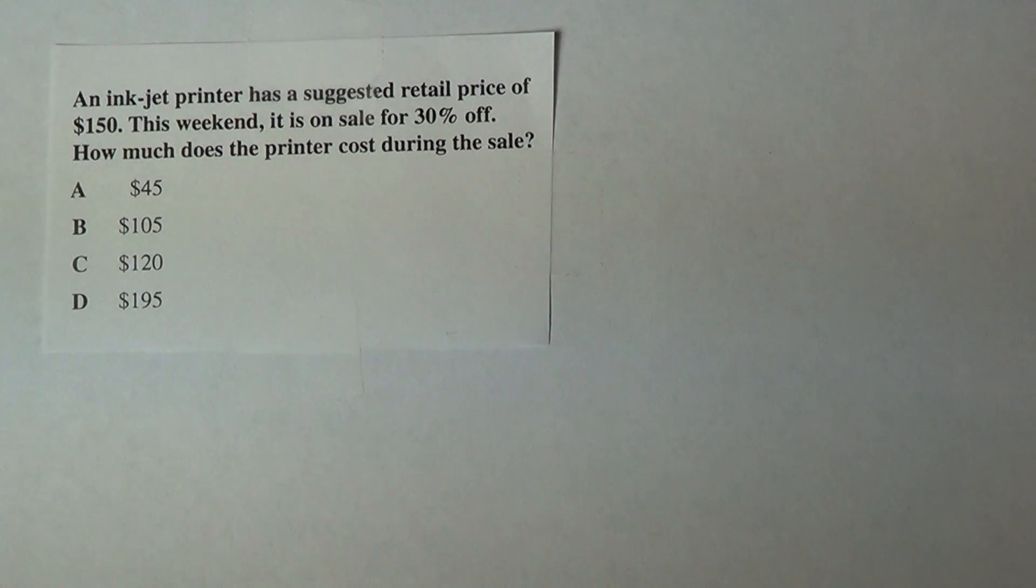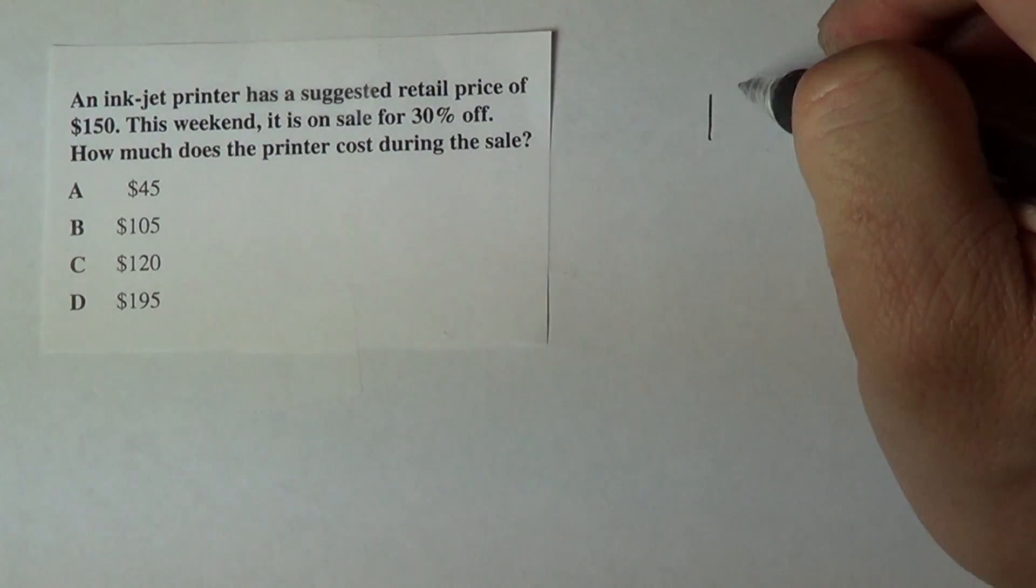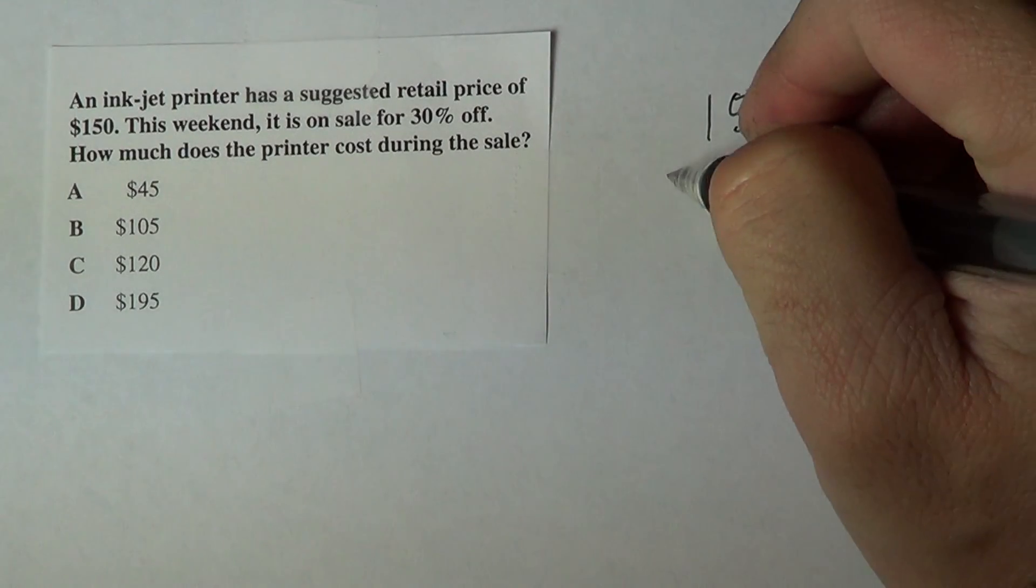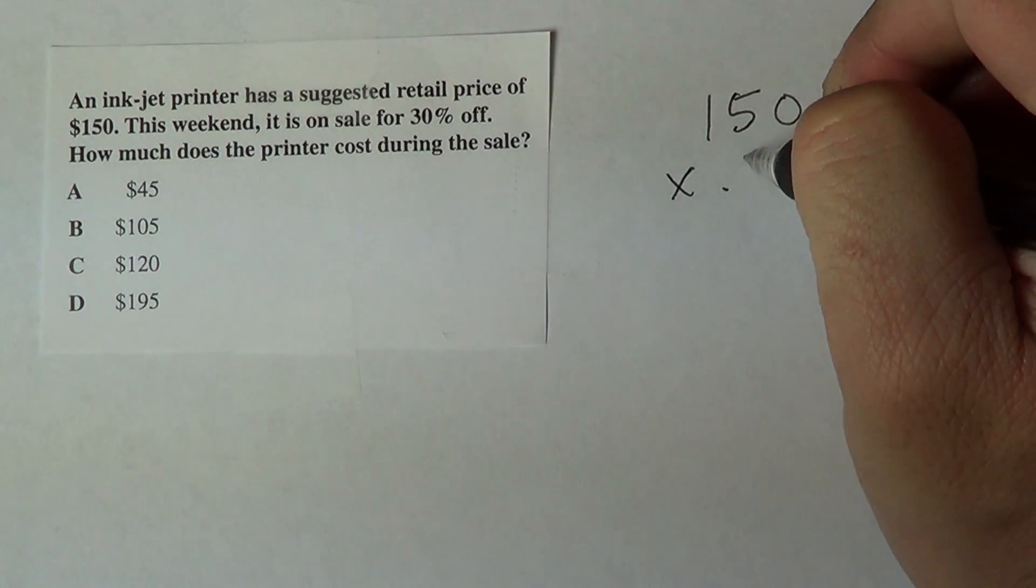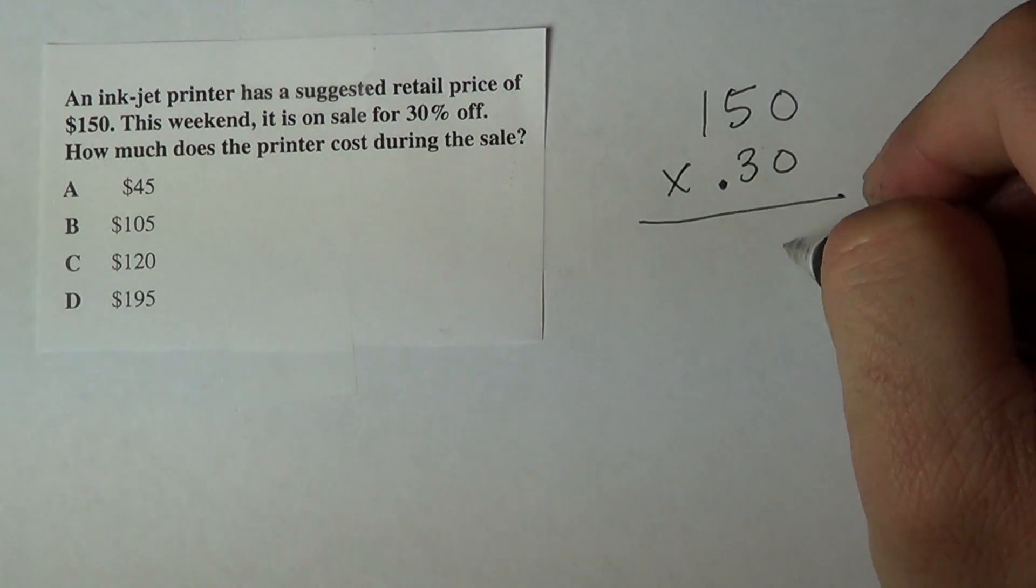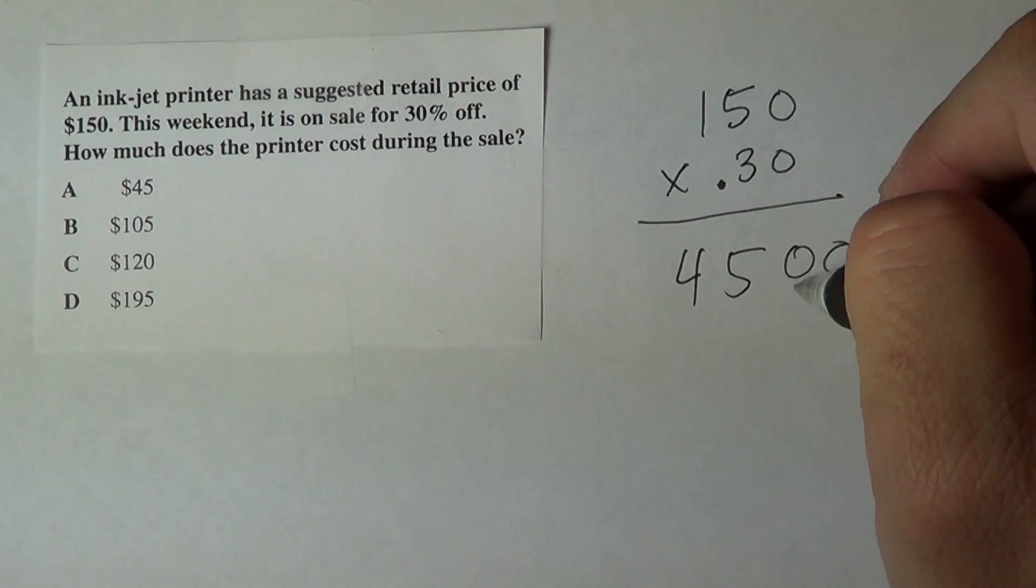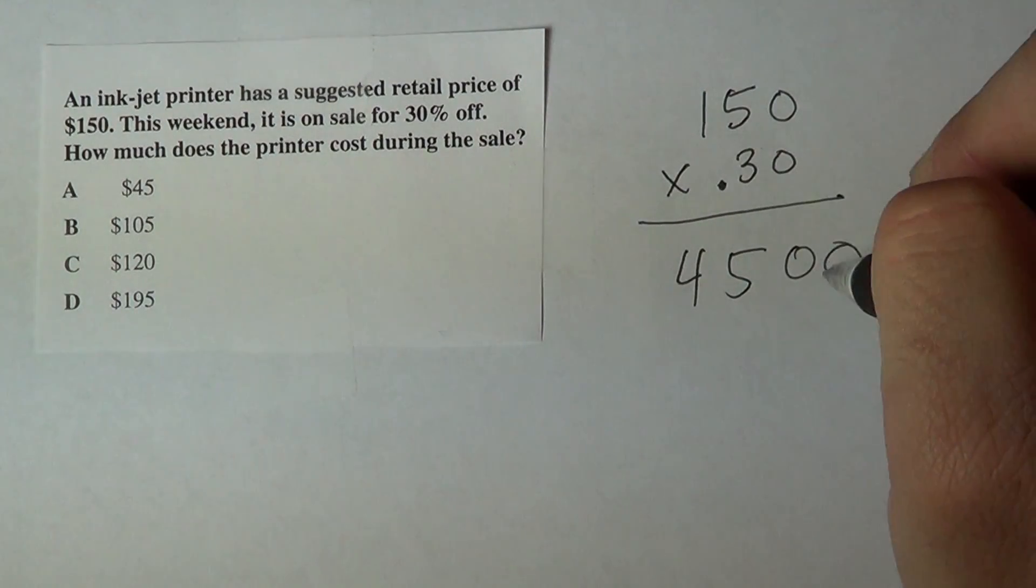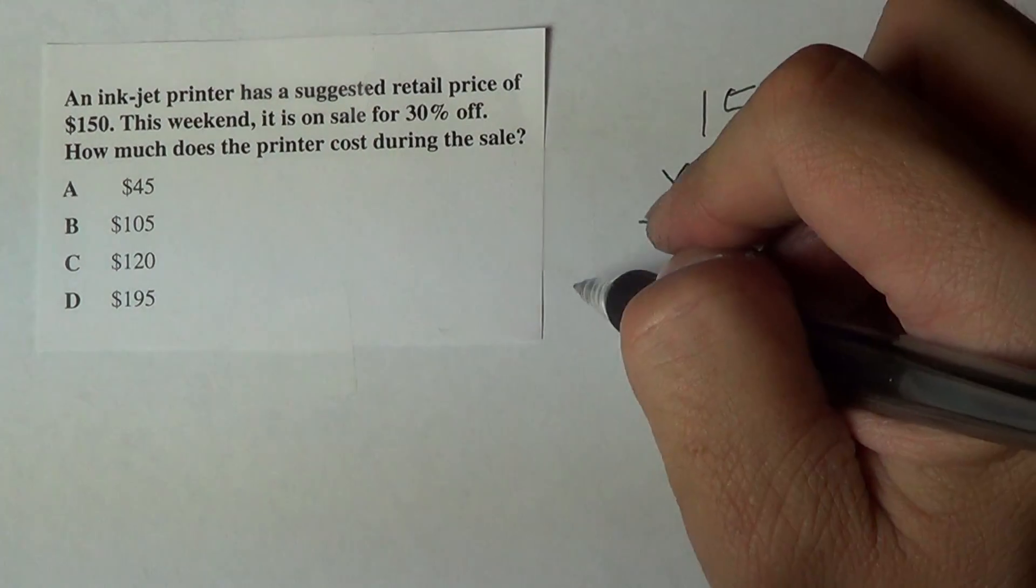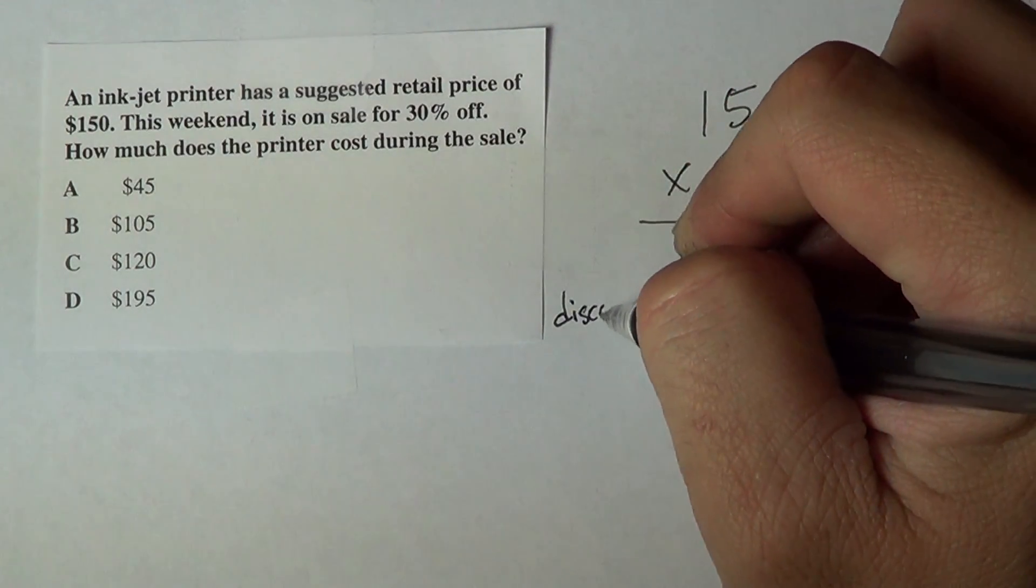Okay, so in this case we have to multiply the total price $150 times 30% to find out the discount. So that's 1, 2, 1, 2. The discount or the 30% off discount is going to be $45 off.